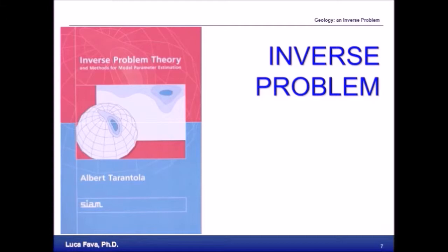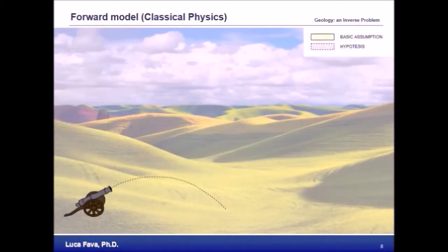I will address this concept with an example. In classical physics we can define a case. In other words, we know exactly the initial conditions. In this example we know which kind of cannon we have, how big it is, we know the dimension of the bullet, the power of the cannon and the inclination of the barrel.